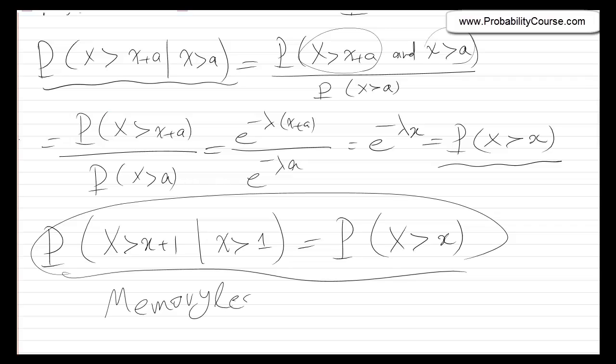The memoryless property is very important — in particular it makes analysis much easier. If I have a system and I can model the arrival of events or customers using these processes, then the analysis becomes much easier because the process is memoryless. We will talk about all of this in much more detail later when we discuss Poisson processes. Thank you.